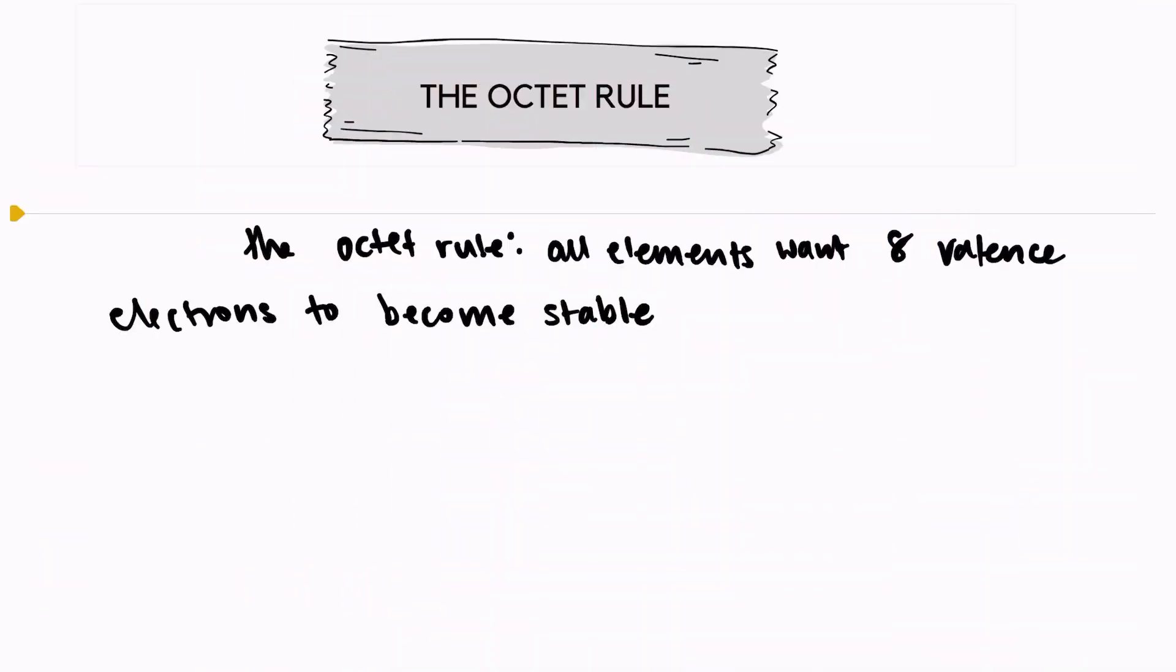Hi, welcome back. In this video we're going to take a look at the octet rule. The octet rule explains the chemical behavior of various elements on the periodic table.